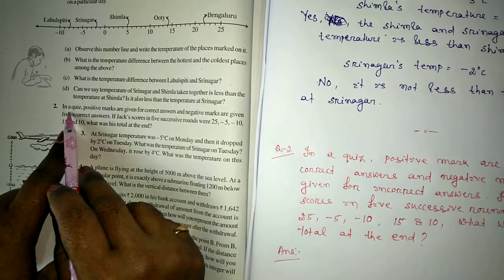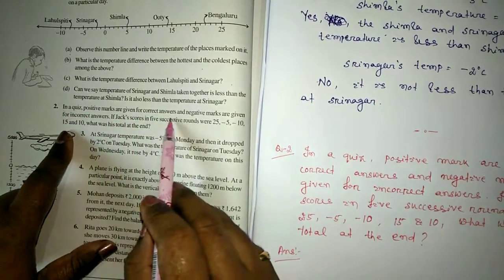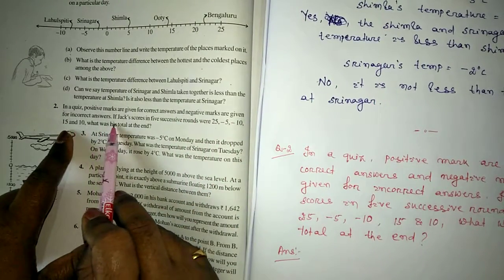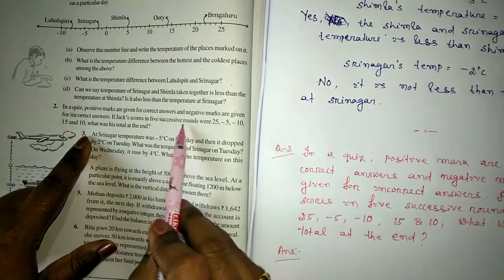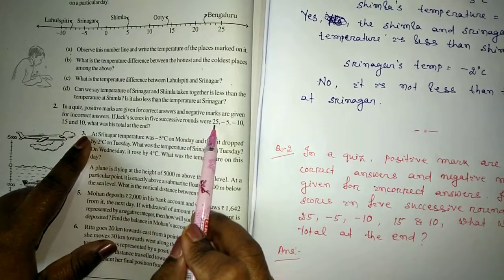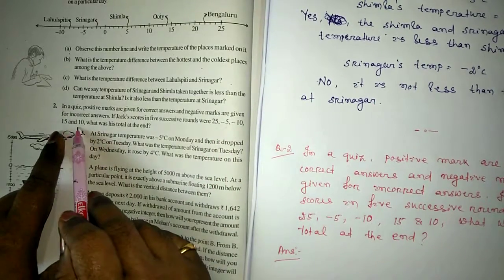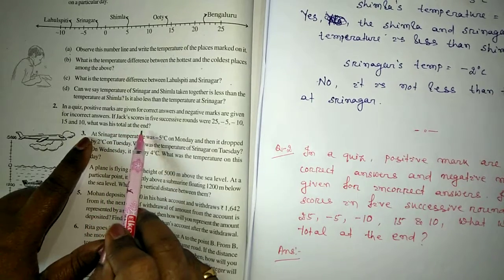Question number 2: In a quiz, positive marks are given for correct answers and negative marks are given for incorrect answers. If Jack's scores in 5 successive rounds were 25, minus 5, minus 10, 15 and 10, what was his total at the end?